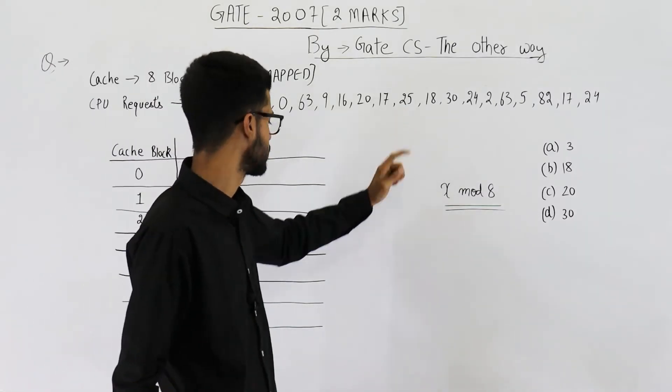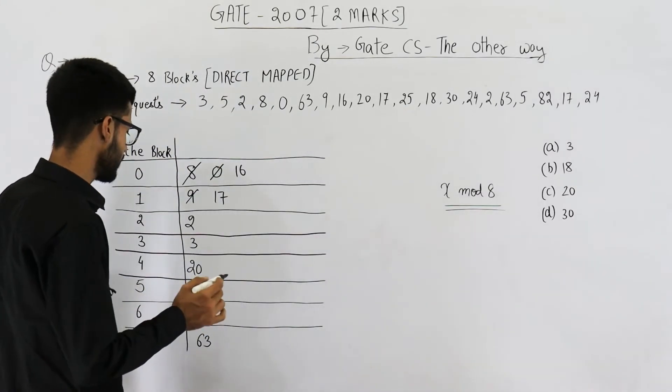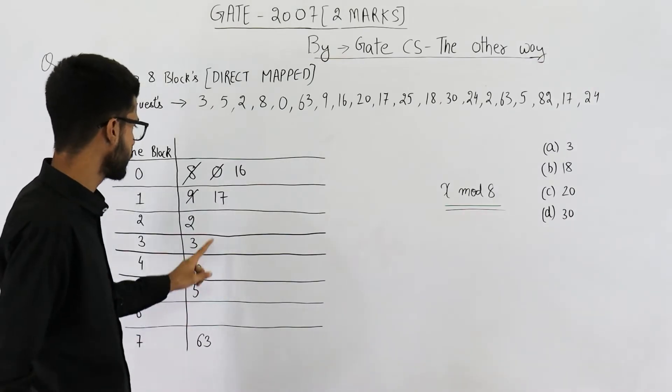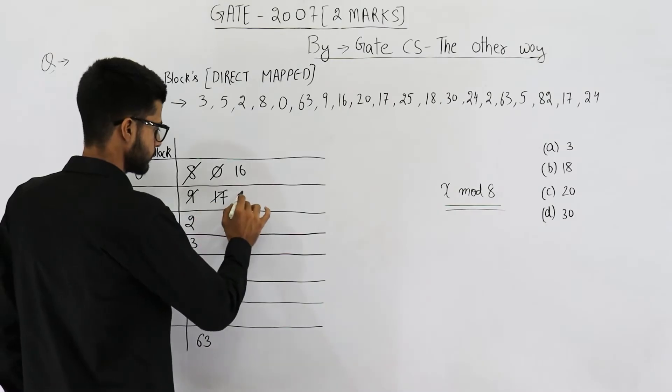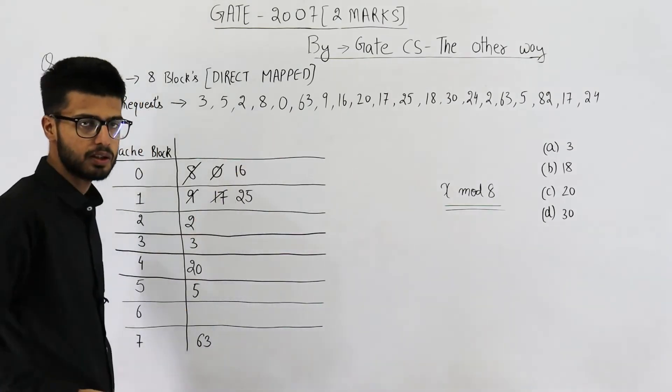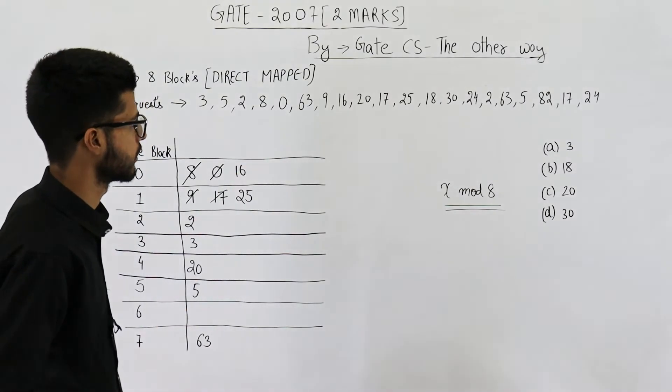Next one is 25. 25 will go, 24 will go here and 25 will go here. So let me just complete all this and I'll let you know the answer.